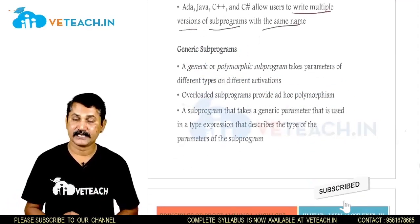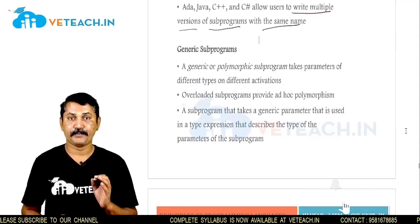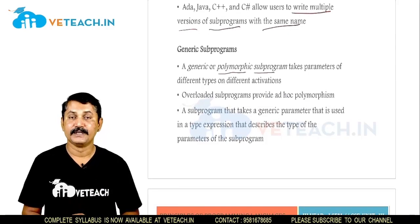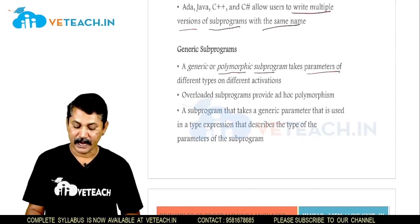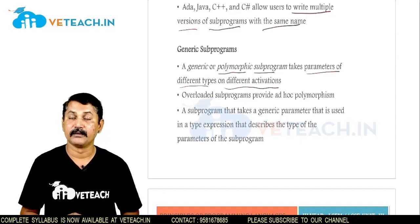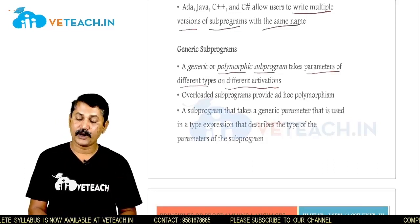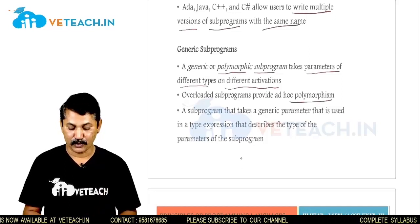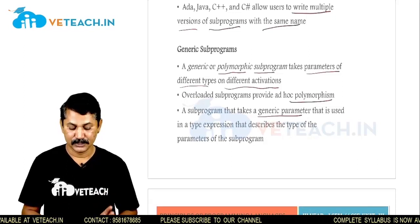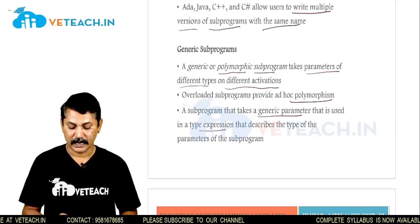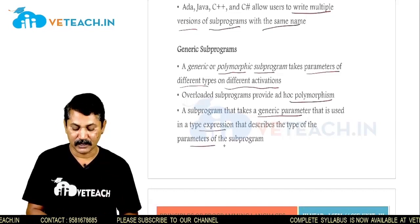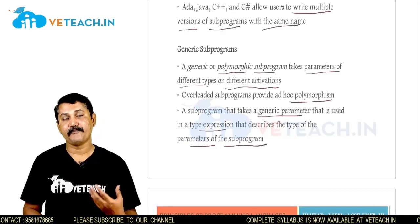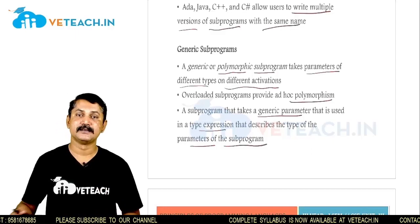The next topic is generic subprograms. A generic subprogram is a polymorphic subprogram which takes parameters of different types on different activations. Overloaded subprograms provide ad hoc polymorphism, and a subprogram that takes a generic parameter uses it in type expressions that describe the types of the parameters of the subprogram.